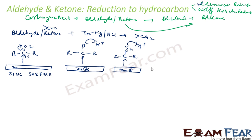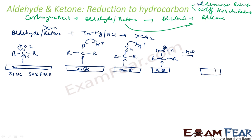The oxygen, having a lone pair, attacks an H⁺ ion to form H2O with a positive charge on oxygen. Being a good leaving group, H2O leaves, and carbon gets a positive charge with two R groups. Zinc, which has potential to donate electrons, gives one more electron to carbon, forming a bond. Zinc becomes Zn²⁺ because it's happy to give electrons.